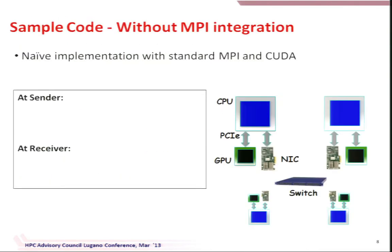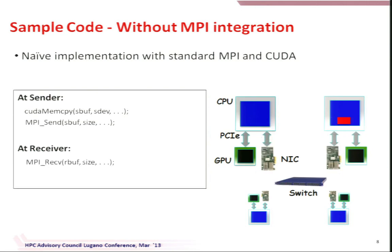Consider a GPU node connected via InfiniBand through a switch to another GPU node. The challenge is to move data from the GPU buffer on one node to the GPU buffer on the other. In a naive implementation, at the sender you do a CUDA memcopy to host memory, then do an MPI send. At the receiver you do an MPI receive, then another CUDA memcopy into the GPU buffer. This involves one copy, a network transfer, and another copy.